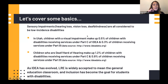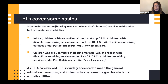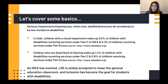Sensory impairments — including hearing loss, vision loss, and deaf-blindness — are all considered very low incidence disabilities. In Utah, children with a visual impairment make up only 0.5% of children with disabilities receiving services under Part C of IDEA and 0.3% under Part B. Children who are deaf/hard of hearing make up about 1.2% under Part C and 0.9% under Part B. So it is very low incidence, and most of us probably don't have a ton of experience interacting with either of these populations.